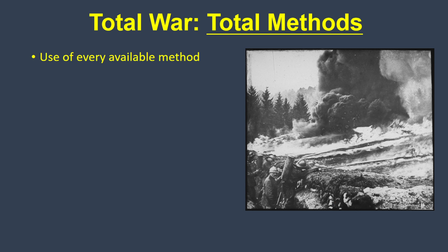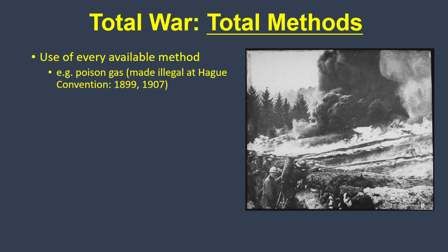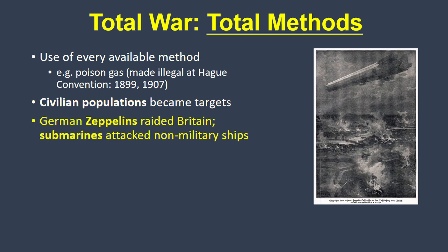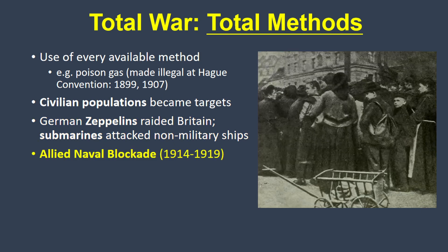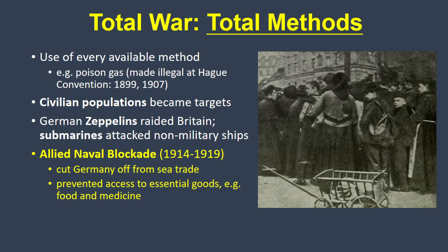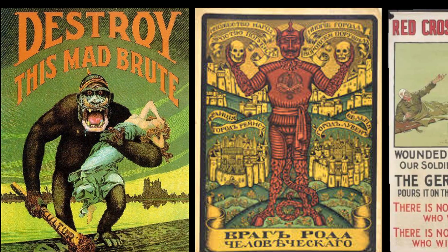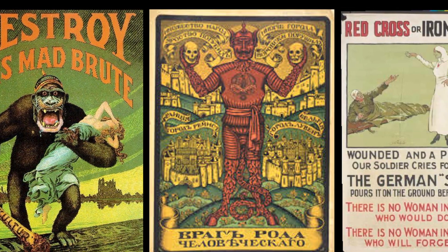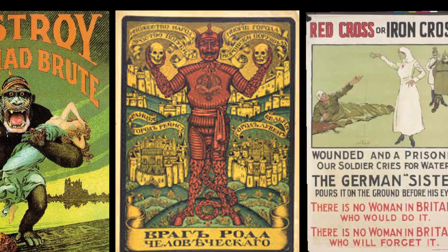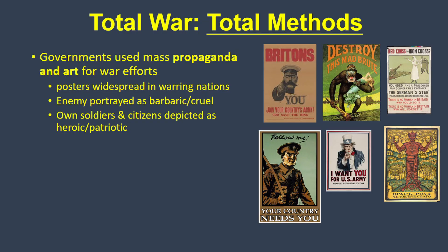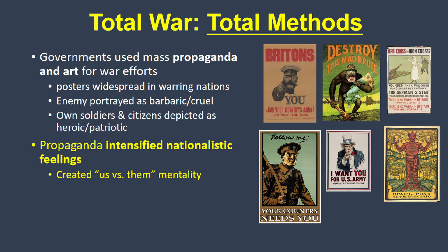Second is total methods. The nations involved used every available method, including poison gas, which had already been declared illegal in previous decades. Civilians became seen as acceptable targets, with German zeppelins conducting air raids in Britain and German submarines attacking non-military ships. British ships enforced the Allied blockade of Germany, cutting the country off from all sea trade, including basic necessities like food and medicine. Governments also employed mass propaganda and art as a method for the war effort. Propaganda posters were printed throughout the various nations — often the enemy was depicted in a dehumanizing way, making them seem barbaric, vicious, and cruel, with their own soldiers and citizens depicted as heroic and patriotic. This went along with intensified nationalism, harnessed by governments to create an us-versus-them mentality and justify the increasing carnage as a necessary and moral sacrifice for the nation.